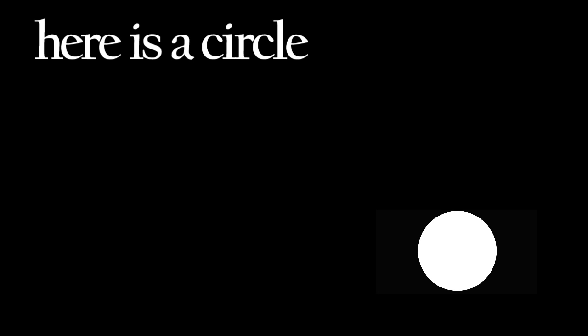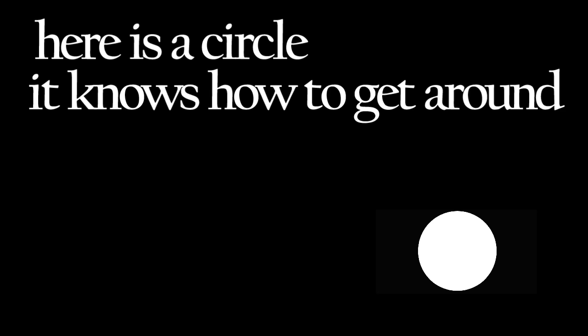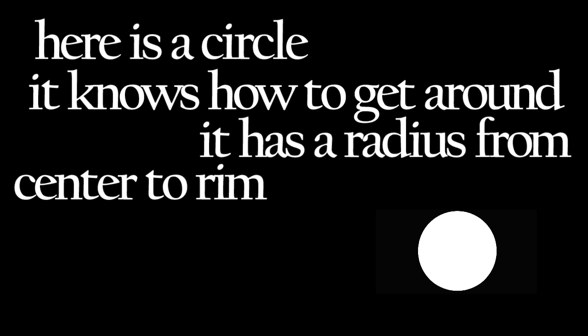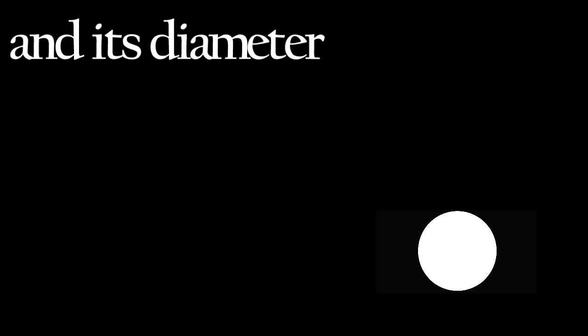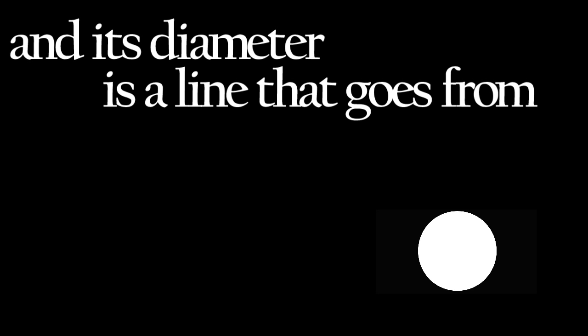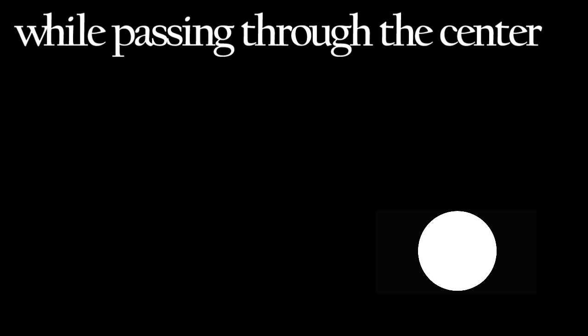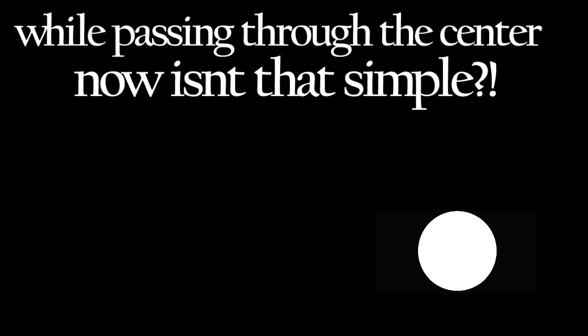Here is a circle, it knows how to get around. It has a radius from center to rim, and its diameter's a line that goes from side to side while passing through the center — now isn't that simple.